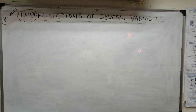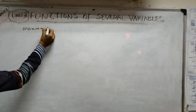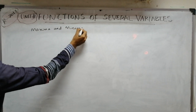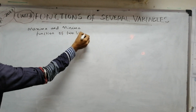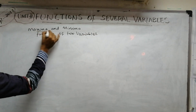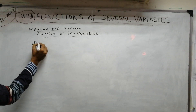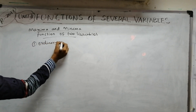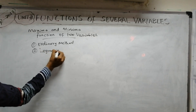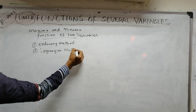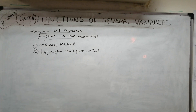Welcome to this STM Max Tutorial. This class covers Maxima and Minima — specifically, maxima and minima of functions of two variables. There are two types of ordinary methods. The second one is the Lagrange Multiplier method.